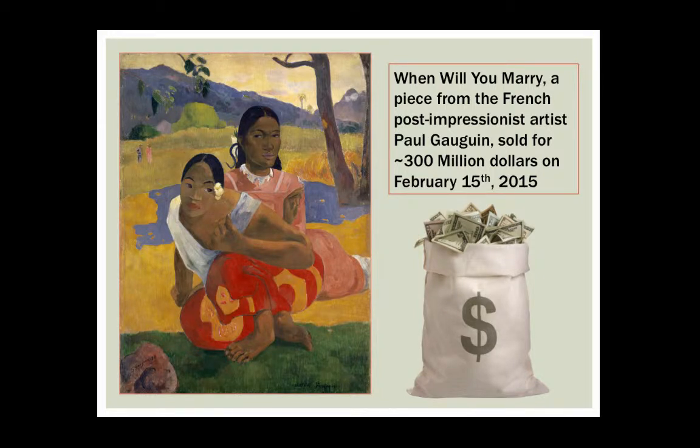When Will You Marry, a famous piece from the French post-impressionist artist Paul Gauguin, sold for $300 million in 2015. Why do we give so much value to original art? Would we pay $300 million for an accurate reproduction? No. Then it can't just be about the physical attributes of the art.